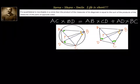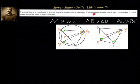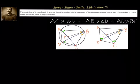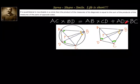What it states is: in a cyclic quadrilateral, the product of measures of diagonals is equal to the sum of the products of measures of pairs of opposite sides. So if we have a cyclic quadrilateral ABCD, then the product of the diagonals AC × BD is equal to AB × CD + AD × BC. This is what Ptolemy's theorem is all about.